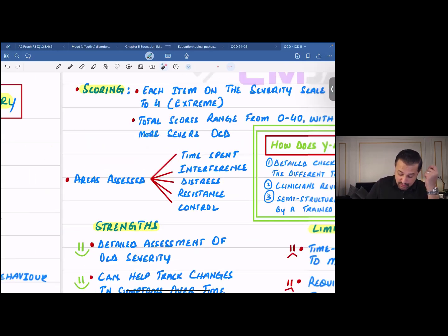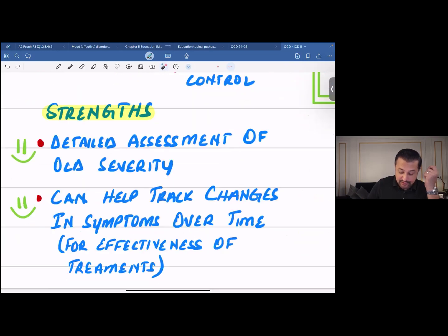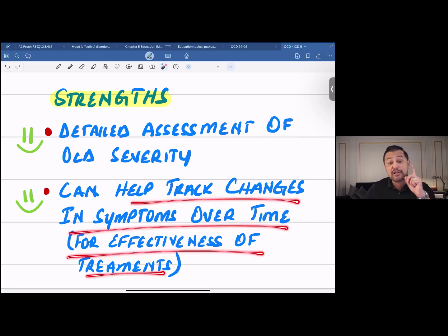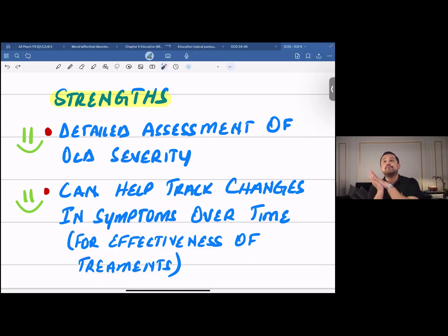Moving on towards the strengths and limitations, if you talk about the strengths of YBOCS, this provides a detailed assessment of OCD severity as compared to MOCI. This can help track changes in symptoms over time for effectiveness of the treatment.